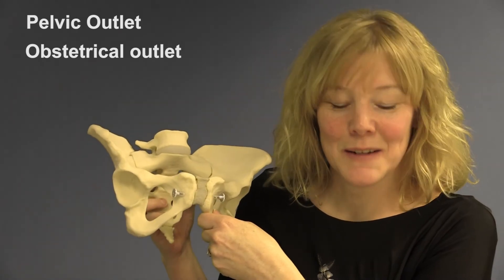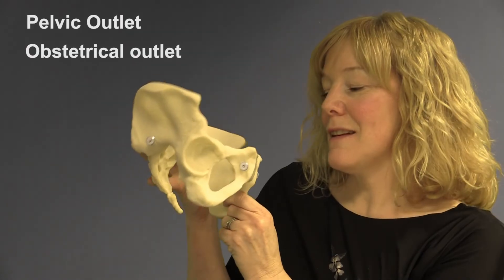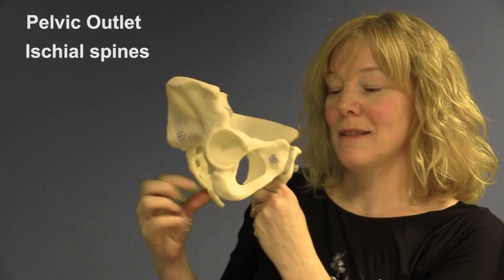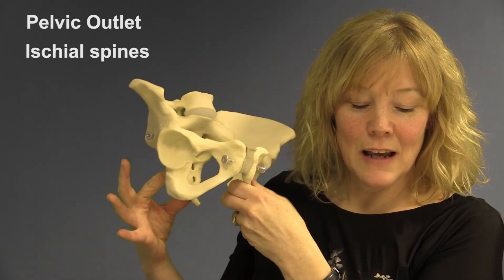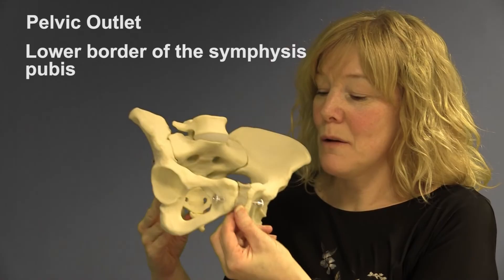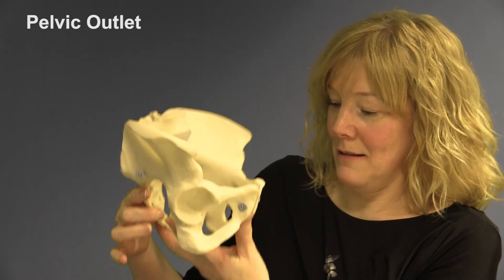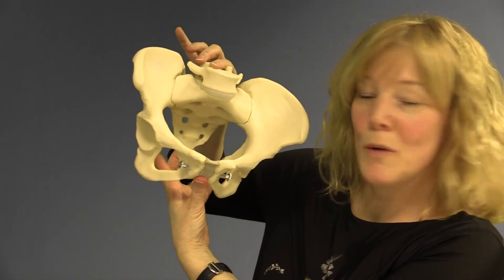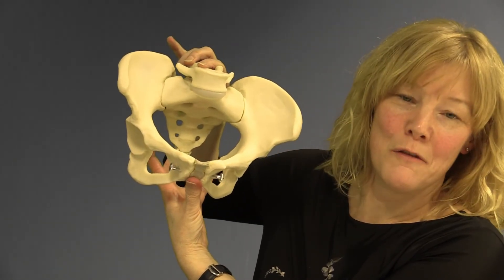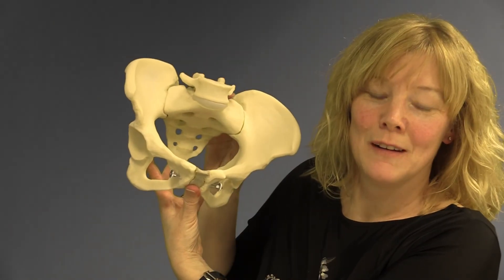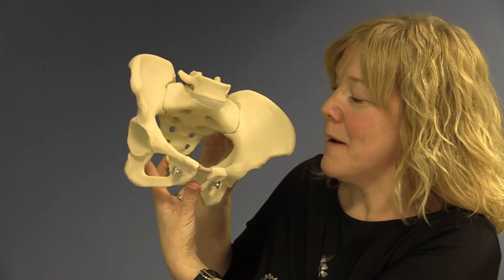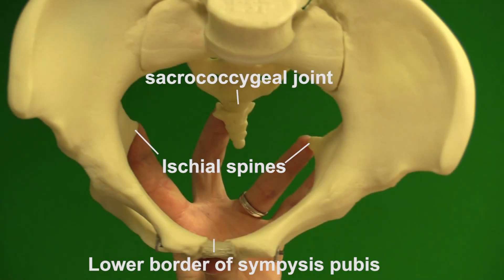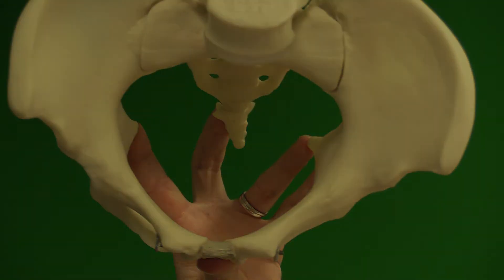The obstetrical outlet is very specifically the sacro-coccygeal joint, the ischial spines, and the lower border of the symphysis pubis — it's those bones that the foetal head has to navigate. So: sacro-coccygeal joint, the two ischial spines, and the lower border of the symphysis pubis — that is the obstetrical outlet of the pelvis, because it's those bones that the foetal head has to navigate past to be born.